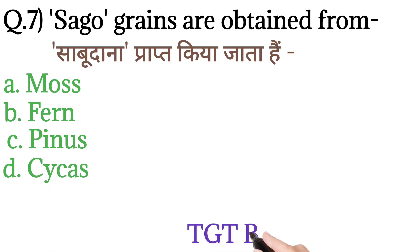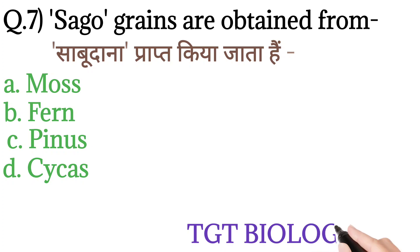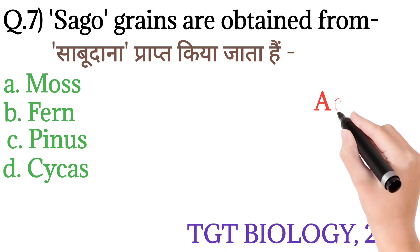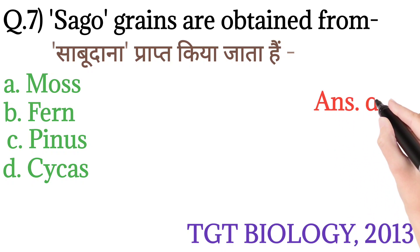This question is from TGT Biology 2013. The answer is option D: Cycas. Cycas se sago dana prapt kiya jata hai.